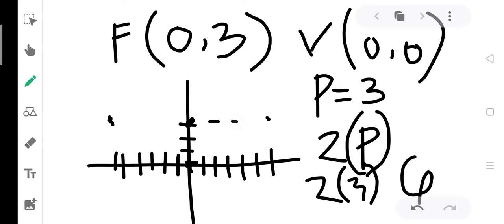We use 2 times P to get the endpoints of latus rectum. This is our graph. Now to find the directrix, which is opposite of our focus.